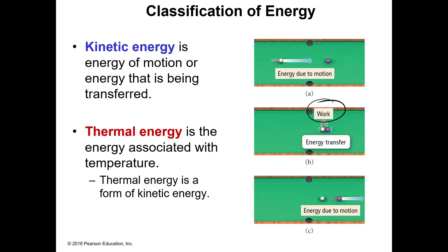Thermal energy, although hard to observe on a pool table, is in fact a type of kinetic energy. Think about ice melting — atoms tied up in the ice are moving, not very much, but they are moving. As you heat water, it melts, and these atoms move faster. The more heat you put in, the faster these particles move. If you put enough energy in, you break the hydrogen bonds and they move around as steam. So heat energy is a type of kinetic energy.